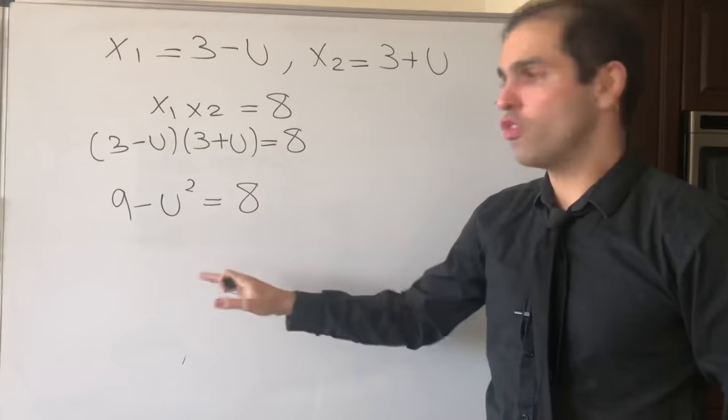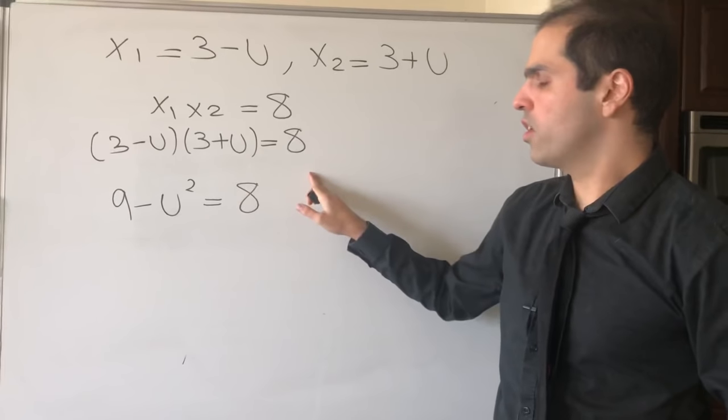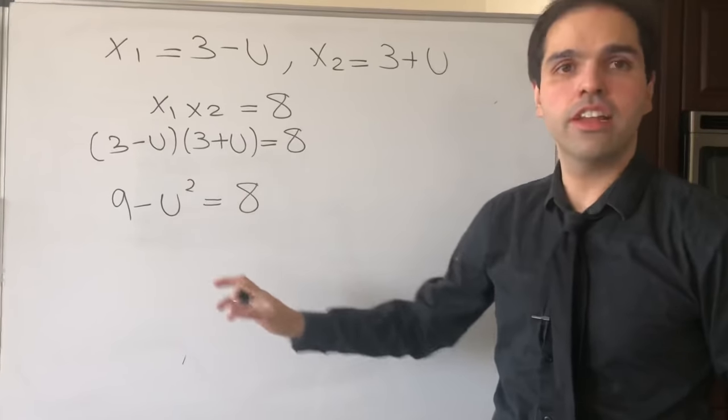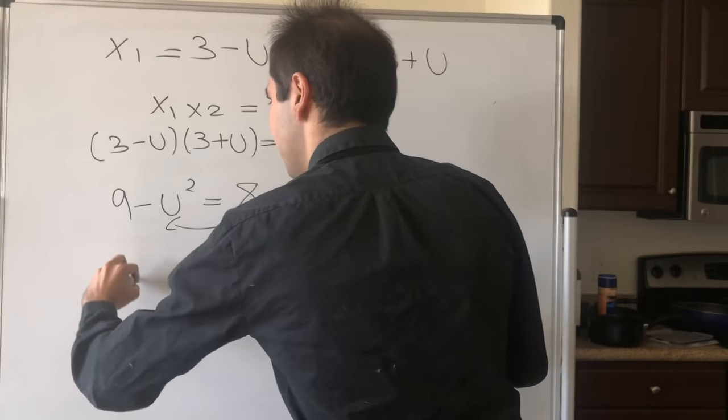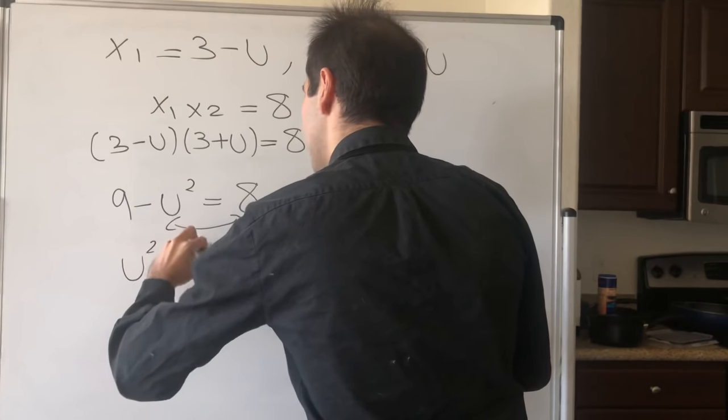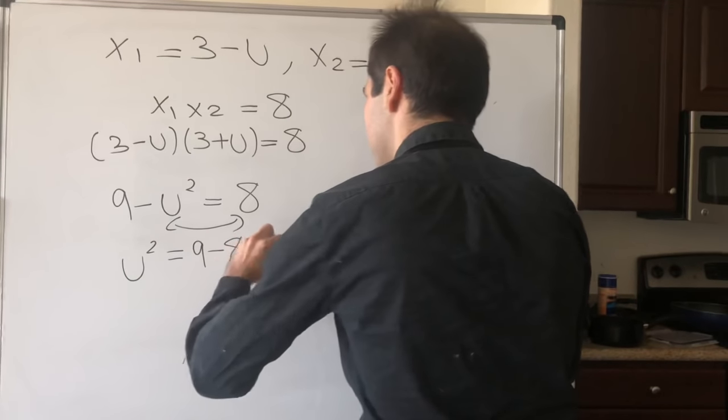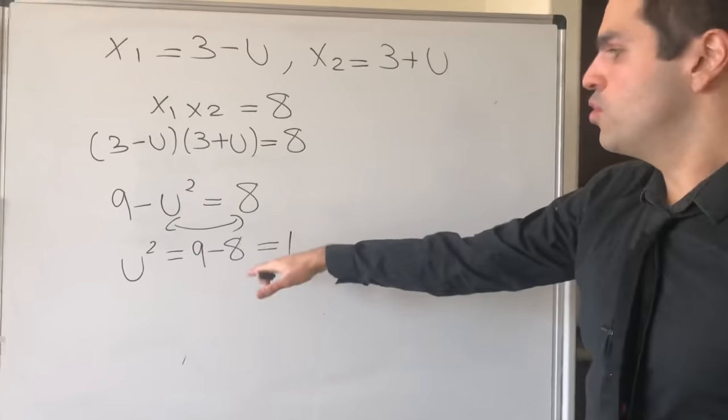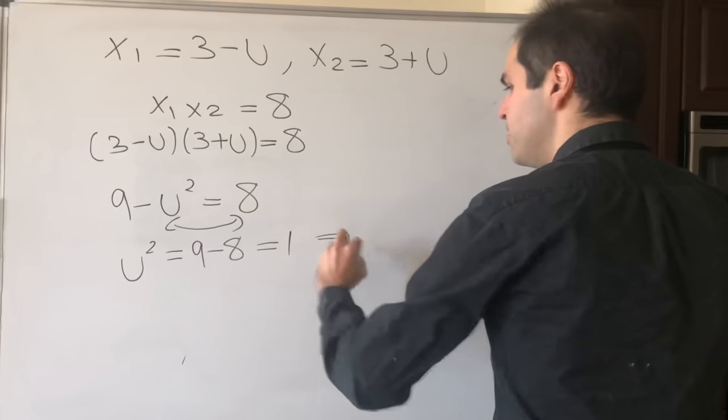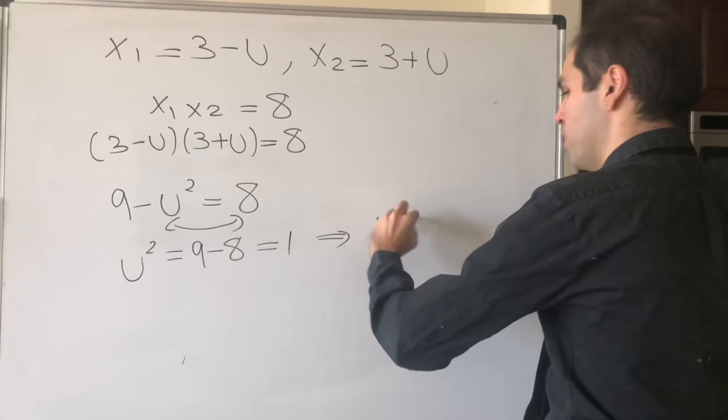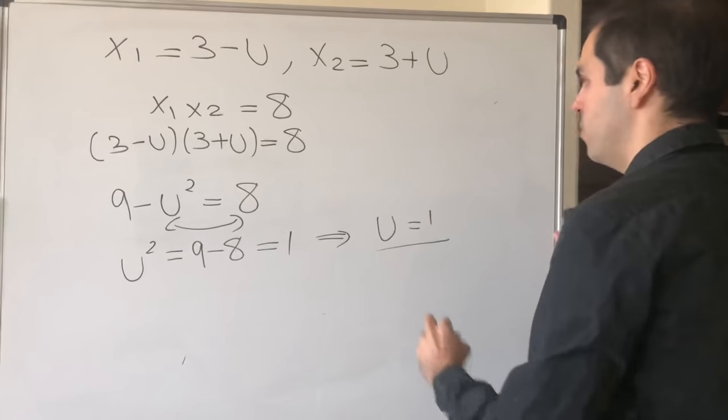But then you can just write this out as 9 - u² = 8. But then you can solve for u. So let's put u² on the right-hand side and 8 on the left-hand side. Then you get u² = 9 - 8, which is 1. So u² = 1, and therefore, since u is a distance, u has to be 1.